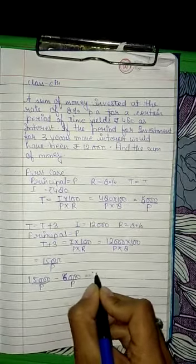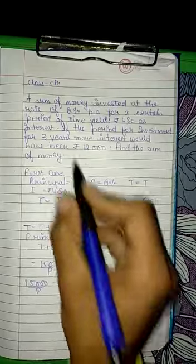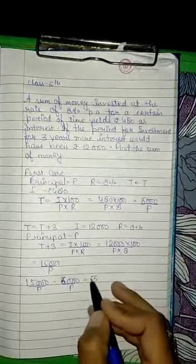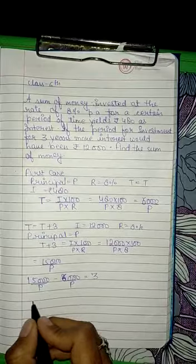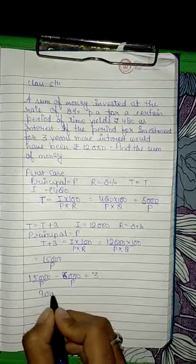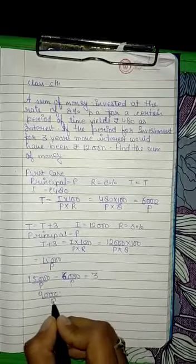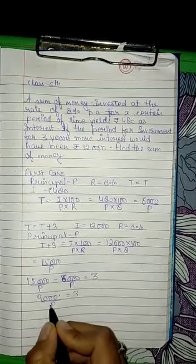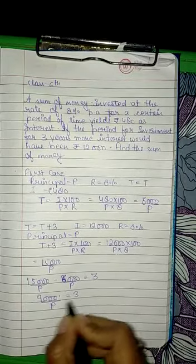When we subtract, the gap of three years will give us: 15,000 divided by P minus 6,000 divided by P equals 3. This gives us 9,000 divided by P equals 3.